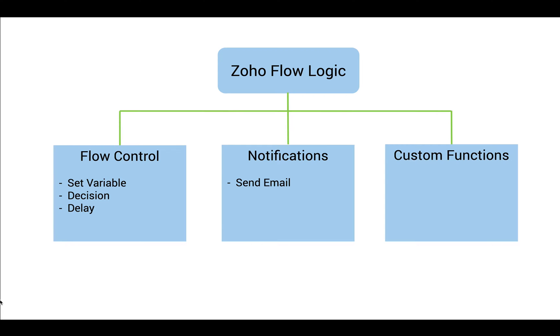Under Notification, we have a Send Mail action that lets us send an email from any domain. And finally, Custom Functions help us build our own functions into a workflow, for which we need to code in Deluge.